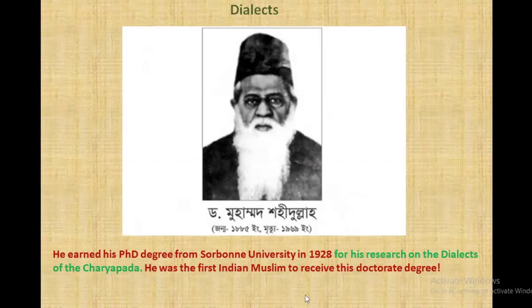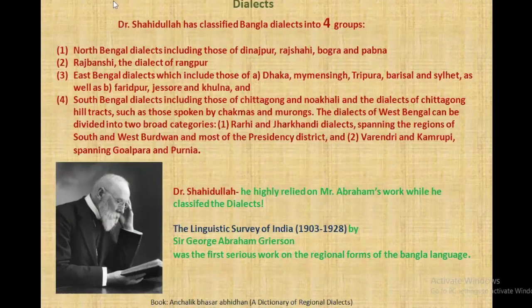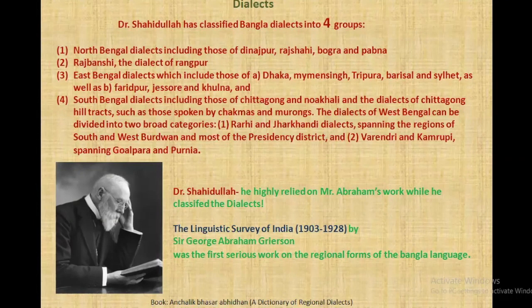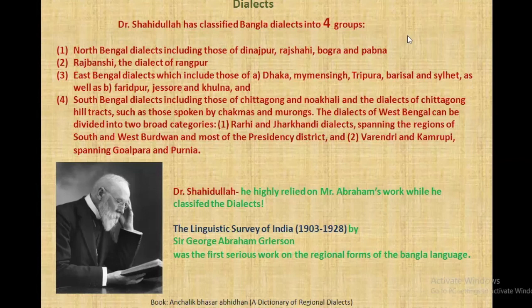According to Shahidullah, there should be four classified versions of dialect: the North Bangla dialects, which include those of Dinajpur, Rajshahi, Bogra, and Pabna; the Rajbangshi dialect of Rangpur; the East Bangla dialect, which includes Dhaka, Mymensingh, Tripura, Barisal, Sylhet, Faridpur, Jessore, and Khulna; and the South Bangla dialects, which include those of Chittagong and Noakhali. Many of us know that people from Sylhet speak in a different manner — their dialect is not actually comprehensible to us. Then there are the Varendra and Kamrupi dialects.